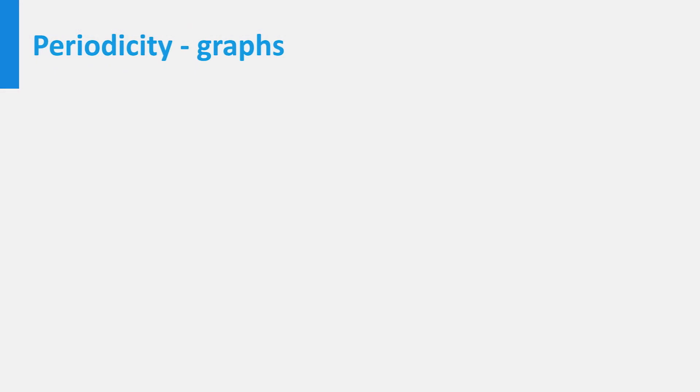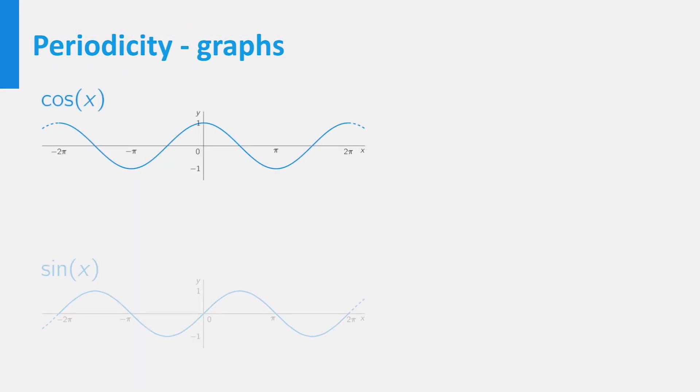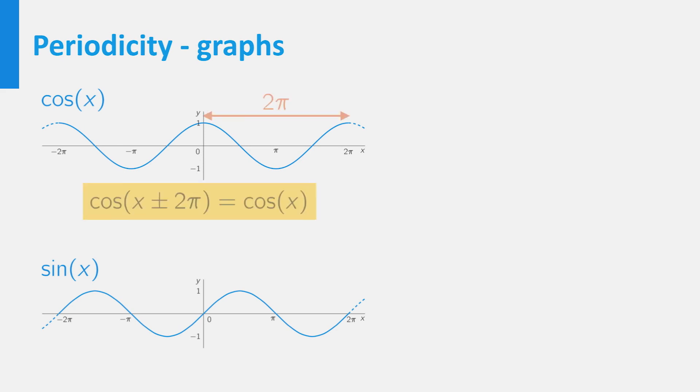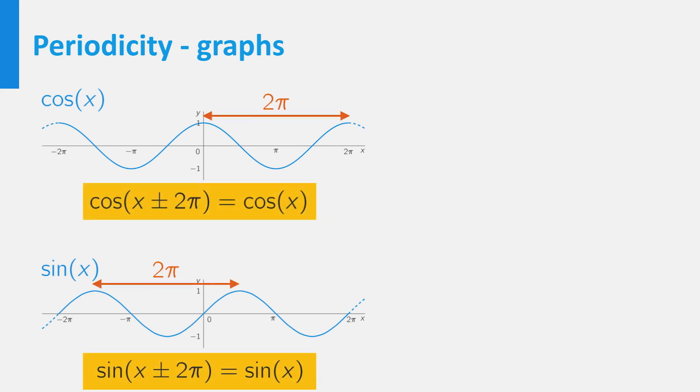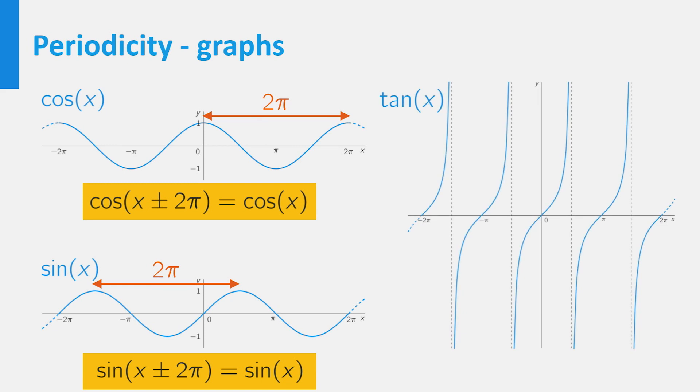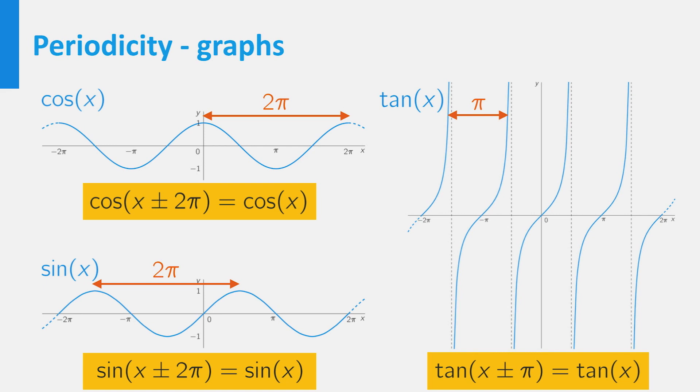The periodicity of the cosine and the sine also becomes clear from their graphs. A shift of 2pi in both the positive and negative direction leads to the same values for both the cosine and the sine. The graph of the tangent shows that this function is periodic too, however it has period pi instead of 2pi.